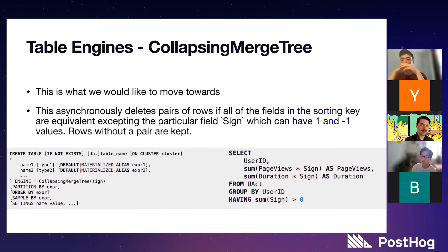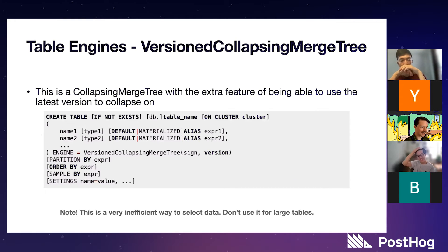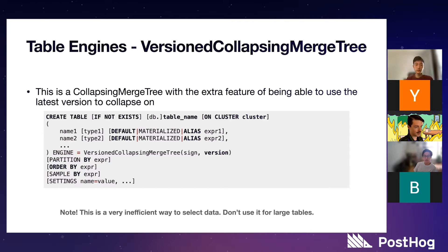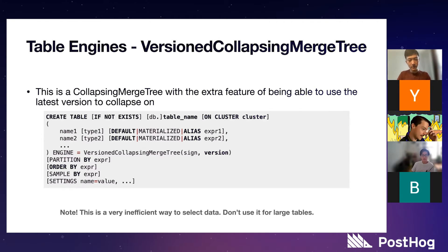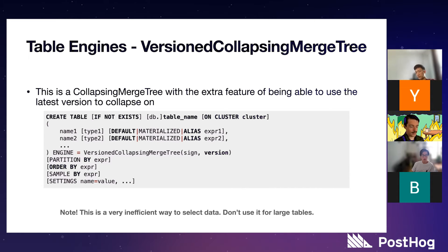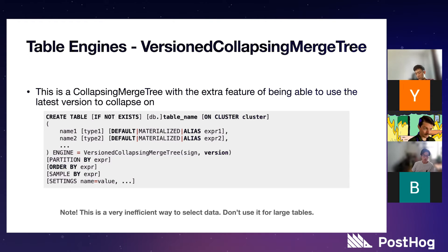For a continuation, there's the VersionedCollapsingMergeTree — the same exact thing except you also have a version column. This helps with at-least-once processing, where you might emit a bunch of new versions of a row leading to multiple positive-one signs. This will reduce based on version — it looks beyond the sign at the version and returns the newest version. However, they call this out in the docs: it's not an efficient way to select data for large tables, because you have to sort every row, grouping by all other fields to get the most recent version based on the version column. That gets expensive quickly.